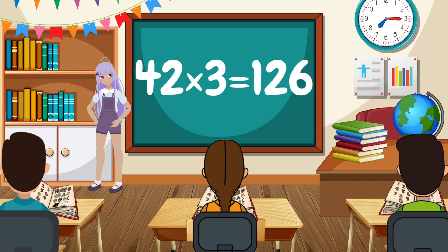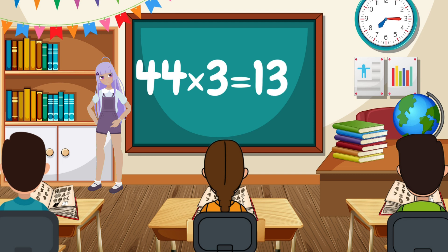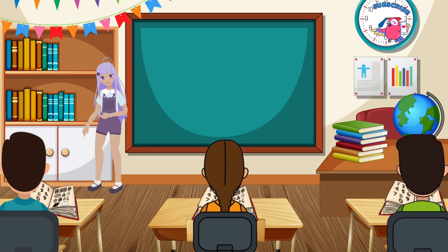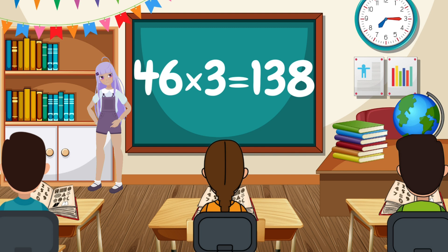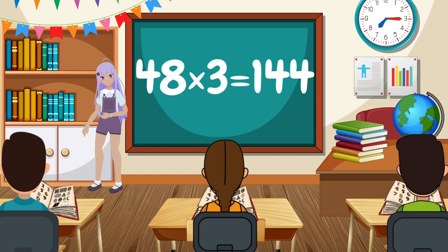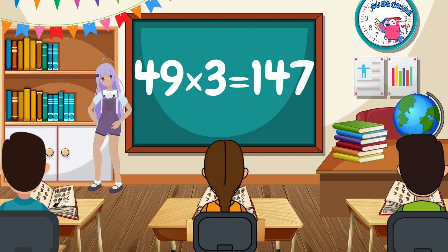43 x 3 equals 129. 44 x 3 equals 132. 45 x 3 equals 135. 46 x 3 equals 138. 47 x 3 equals 141. 48 x 3 equals 144. 49 x 3 equals 147.